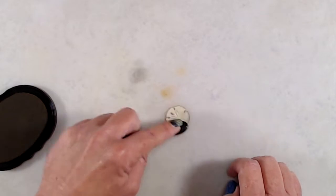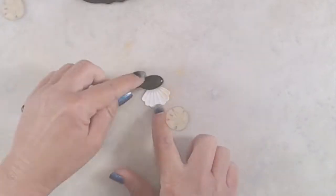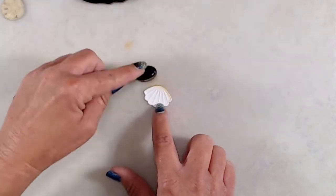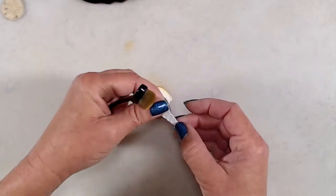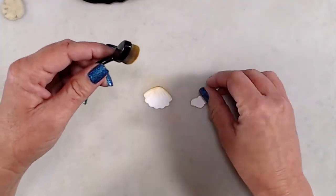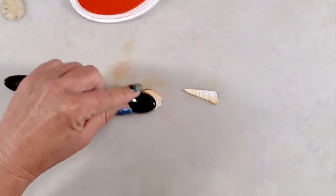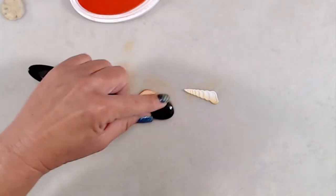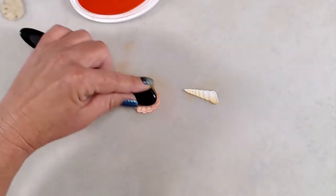For the scallop shell and the long twisty swirly shell—I still don't know what that's called—I started out along the bottom with the brown ink that I used for the sand. After I had the bottom edges of those shells inked up with the brown, I came in and finished up with a peach colored ink. After I had all of my elements ink blended and my images colored, which I did off-camera in the interest of time, it was time to put the card together.